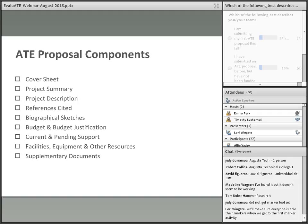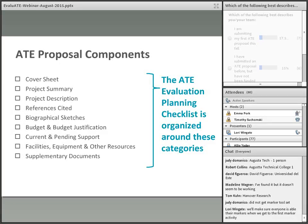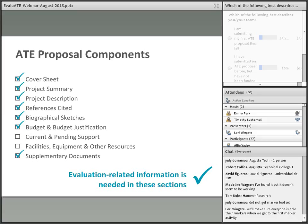Here are the required contents of an NSF proposal according to the NSF Grant Proposal Guide — if you haven't checked that out and you're thinking of putting in an NSF proposal, you definitely should. The ATE Evaluation Planning Checklist is organized around these categories. The check marks identify the components of the proposal where information related to your evaluation is needed, starting with the cover sheet.